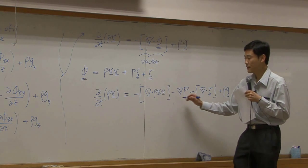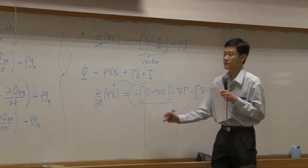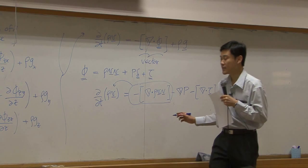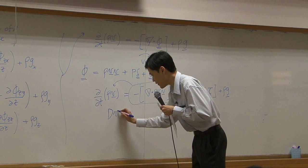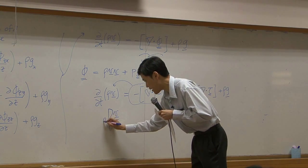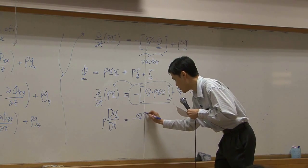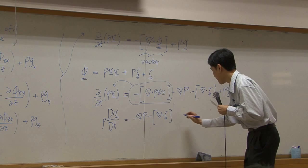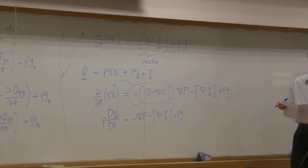Now, if you take this part to this side, differentiation with respect to t plus this term, it can be proved to be substantial derivative of velocity by dt times rho, equal to minus del P minus del dot tau plus rho G.